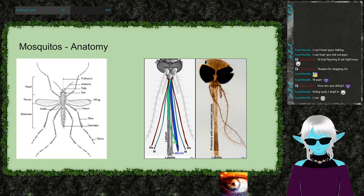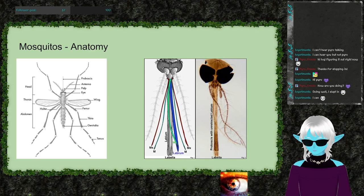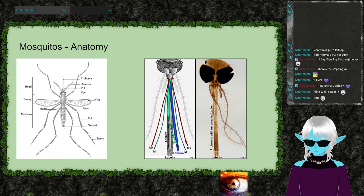Mosquitoes are insects, meaning they have six legs and two pairs of wings, though photos often make it look like one pair. As larvae, eggs are laid in water and float at the surface. This is why you see more mosquitoes near standing water. With the rise of farming and water storage, standing water became more common, which likely drove the explosive increase in mosquito diversity.